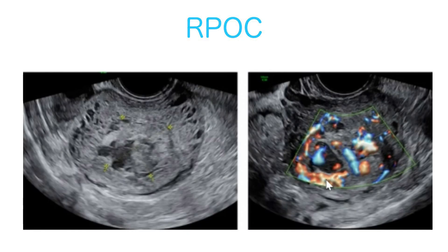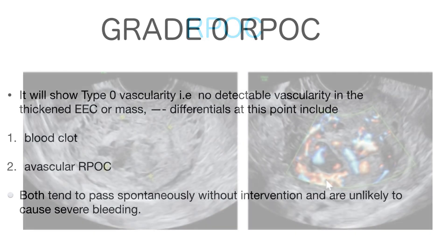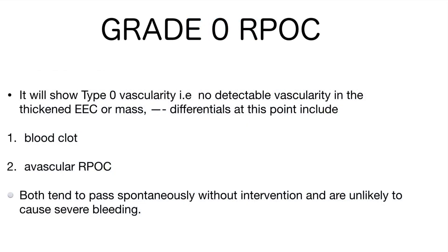RPOC has been graded based on internal vascularity into four grades: Grade 0, 1, 2, and 3.